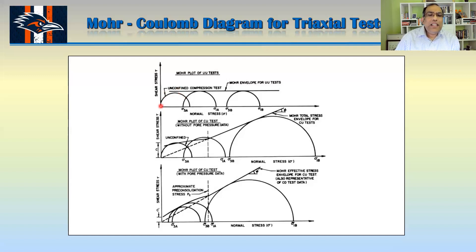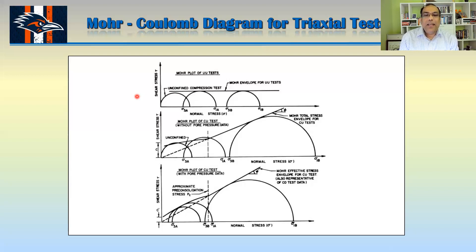But you can see this circle is a little bit smaller than the other two UU test circles. Why is this circle a little smaller? Most of the time your circle would be a little bit smaller because your specimen is not completely saturated for the unconfined compression test. On the other hand, complete saturation is a requirement for the UU test. So if your soil is not completely saturated, you might see a slightly different Mohr circle for the unconfined compression test.